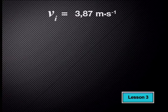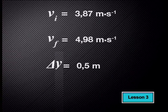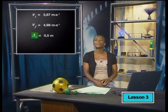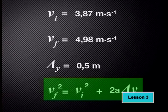We have the following information. The initial velocity, our first reading, has a value of 3.87 meters per second. The final velocity, the second reading, has a value of 4.98 meters per second. The distance traveled is half a meter. Note that instead of using delta x, we now use delta y to indicate displacement as the ball is moving in the y-plane. So, because we have all these values, I'm using the equation vf squared equals vi squared plus 2 times a times delta y.